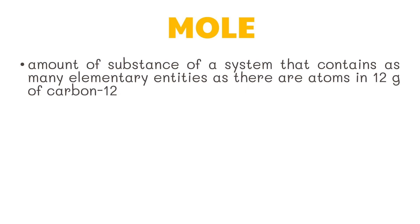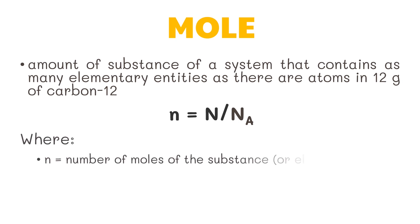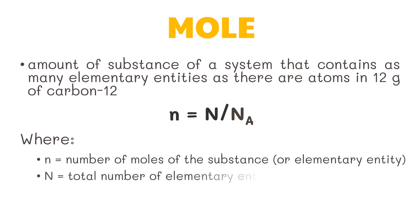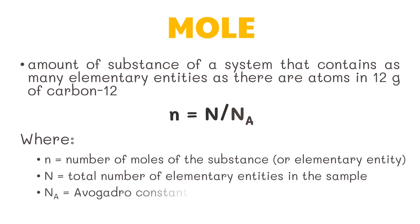The number of moles of a substance in a given pure sample can be represented by the formula: n = N / N_A, where small n is the number of moles of the substance, capitalized N is the total number of elementary entities in the sample, and N_A is the Avogadro constant.